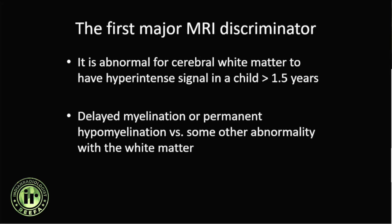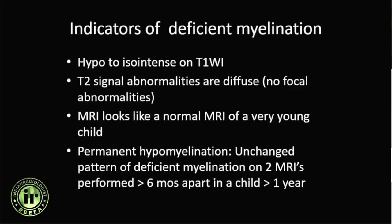Hypomyelination can only be diagnosed in a child more than one and a half years of age. Deficient myelination is characterized by myelination that is hypo- to isointense on T1-weighted images with diffuse signal on T2-weighted images — basically an MRI that looks like that of a very young child, not age-appropriate. Permanent hypomyelination can only be diagnosed when there is an unchanged pattern of deficient myelination on two MRIs performed at least six months apart in a child over one year old.